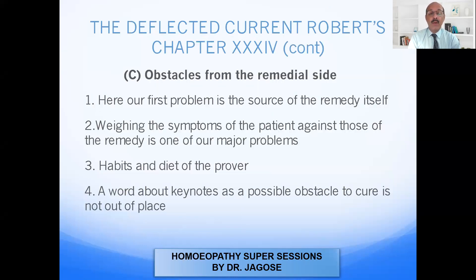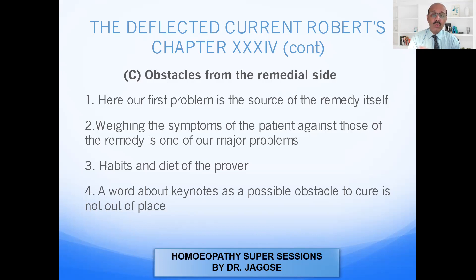Now let us see the third point, point number C: obstacles from the remedial side. Our first problem is the source of the remedy itself. Second, weighing the symptoms of the patient against those of the remedy is one of our major problems. Third, habits and diets of the prover. And fourth, a word about keynotes as a possible obstacle to cure. Let us see these four points one by one.